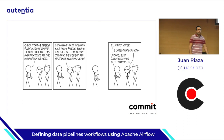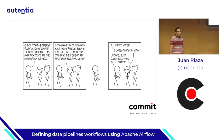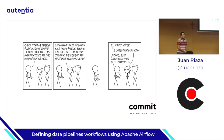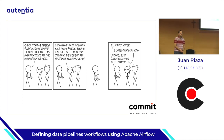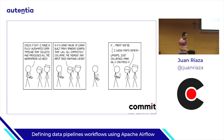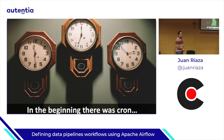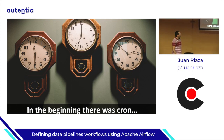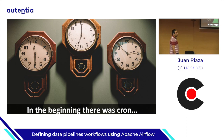I'll give you 30 seconds to read this comic strip from XKCD. Perhaps some of you have been in that situation. If you've been building ETLs or data pipelines, they can get really complex and sometimes you don't have much control over them. So this is a bit of a story. In the beginning, there was cron. When we start developing ETLs or data pipelines, we always think of cron. We have to schedule a certain task.